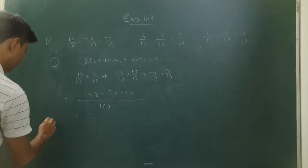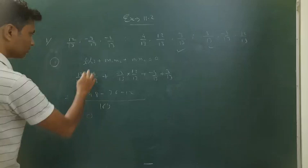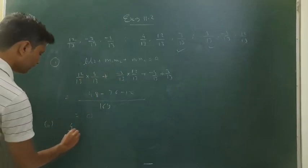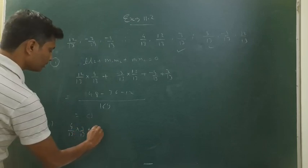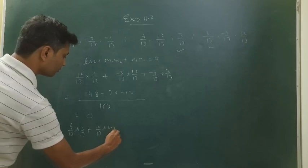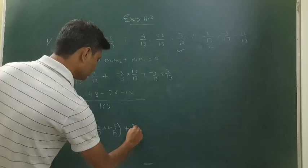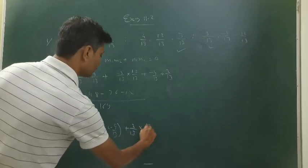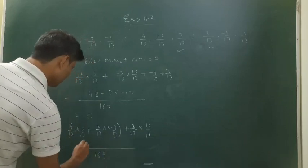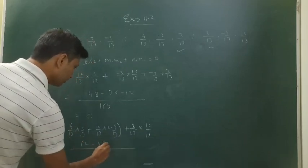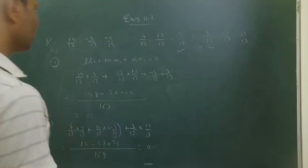Second condition, checking lines 2 and 3: (4/13)*(3/13) + (12/13)*(-4/13) + (3/13)*(12/13). This equals 12/169 - 48/169 + 36/169 = 0. Therefore, these lines are also perpendicular.